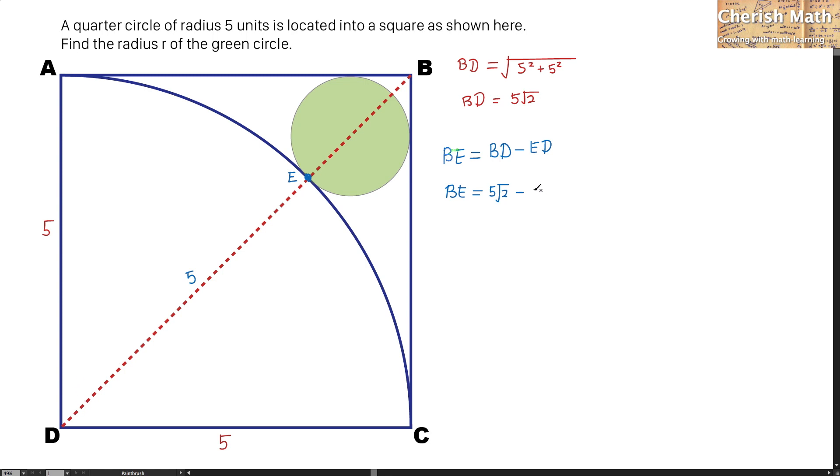Let me draw a square located here where the corner of the square is actually touching the center of the green circle. The radius of the green circle is denoted with the letter R. This is the radius.